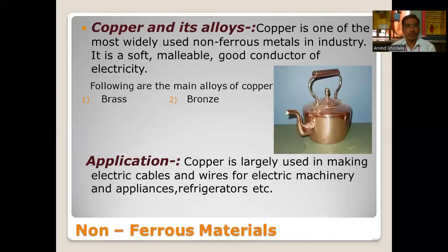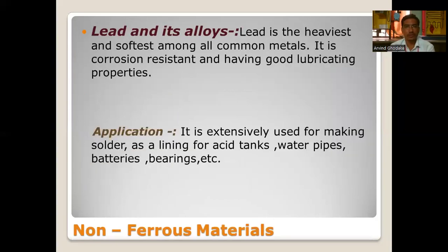Copper is one of the most widely used non-ferrous metals in industry. It is soft, malleable, and a good conductor of electricity. The main alloys of copper are brass and bronze. Applications include making electric cables and wires for electric machinery and appliances, refrigerators, etc.